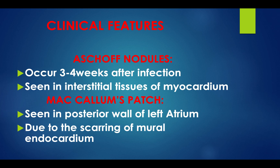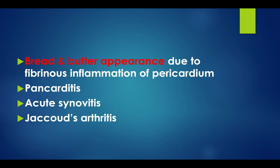Clinical features: Aschoff nodules occur three to four weeks after infection and are seen in the interstitial tissues of the myocardium. MacCallum's patches are seen in the posterior wall of the left atrium due to scarring of the mural endocardium. A bread-and-butter appearance results from fibrinous inflammation of the pericardium.